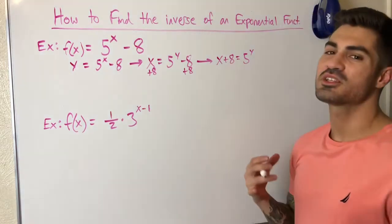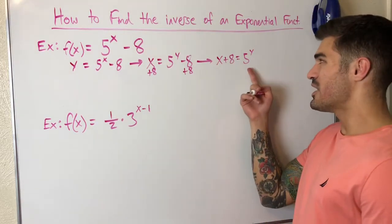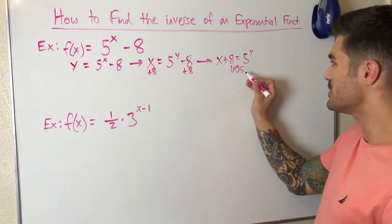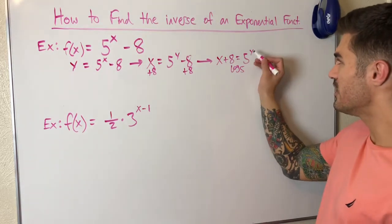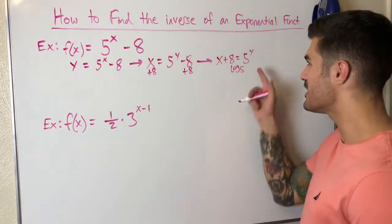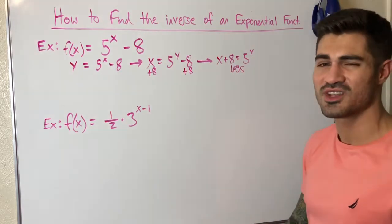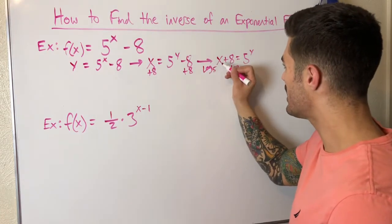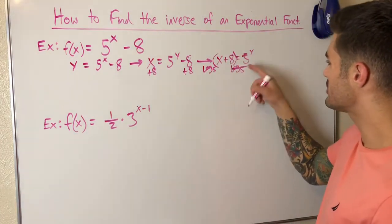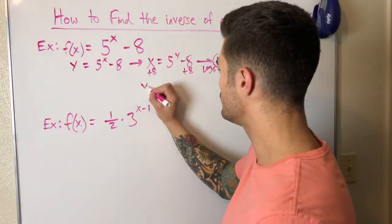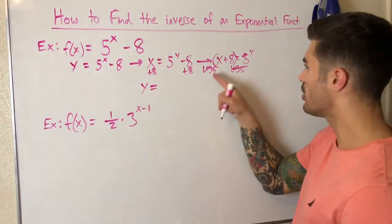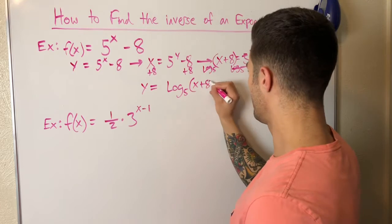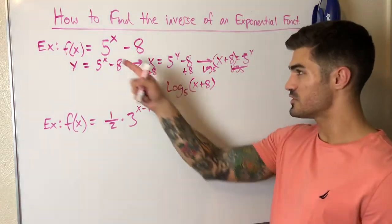Now I take log base 5 of both sides, because log base 5 of 5 becomes 1, and the y comes out in front using logarithm properties. So I'm left with y equals log base 5 of (x + 8). That's my inverse function.